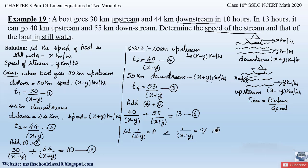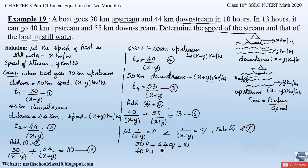Substituting in equations 3 and 6, we obtain the linear equations: 30p plus 44q equals 10, and 40p plus 55q equals 13. We have obtained a pair of linear equations.